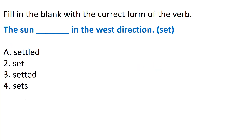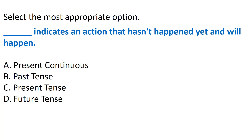Now a grammar question: 'Fill in the blank with the correct form of the verb - The sun ___ in the west direction.' Options: A) Settled, B) Set, C) Set, D) Sets. The correct answer is Option D - Sets. 'The sun sets in the west direction' is the correct sentence using the simple present tense form.